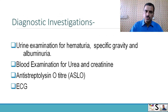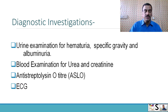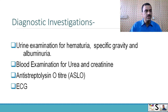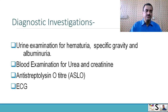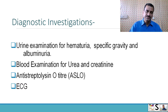What diagnostic investigations will your doctor ask for? First, urine examination for hematuria, specific gravity, and albuminuria. Second, blood examination for urea and creatinine. Third, anti-streptolysin O titer (ASLO) test and ECG can also be done.